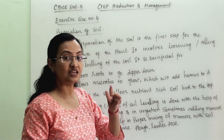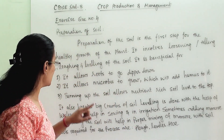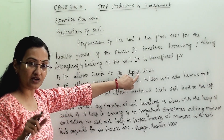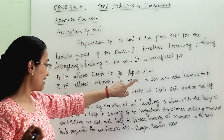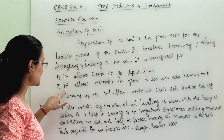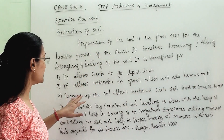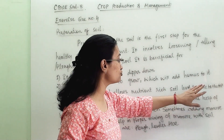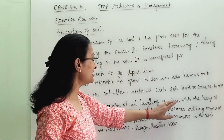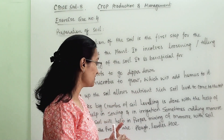So there are two things in preparation of the soil: first, tilling, and second, leveling. The three key benefits are: it allows roots to grow deeper and access organic matter; it allows microbes to grow, which adds humus to the soil; and turning up the soil brings the nutrient-rich layer to the top. Leveling is done with a leveler and helps in sowing and irrigation.